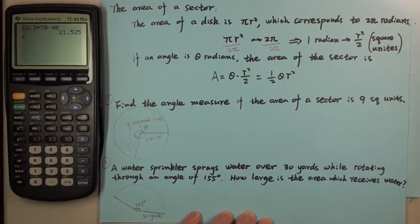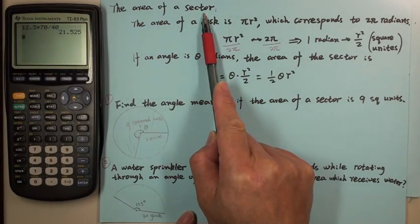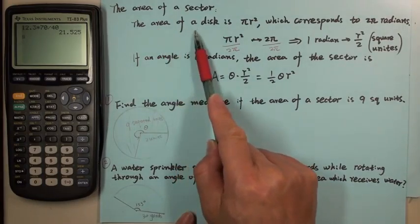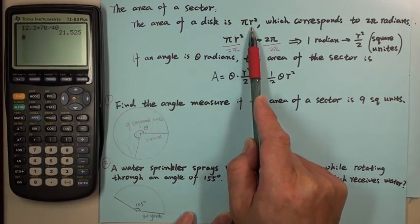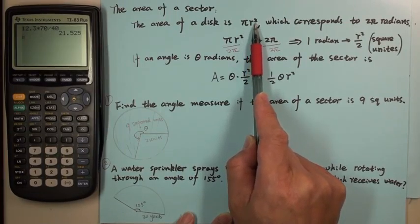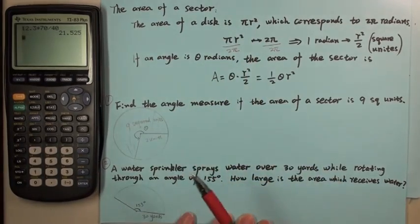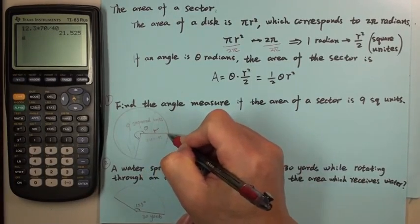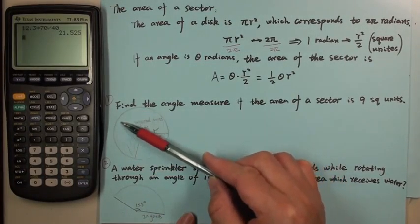In this lecture we'll look at the area of a sector and see the applications. We know the area of a disk is π r squared, where r is the radius. So r squared times π will be the area of the whole disk — for example, from here to here is r, and r squared times π gives the area of this whole disk.